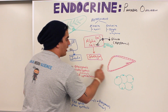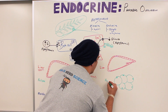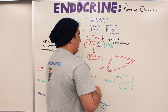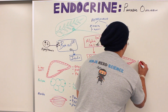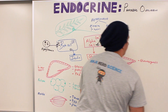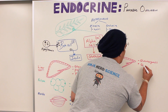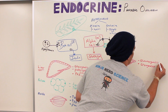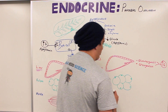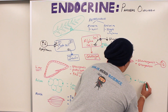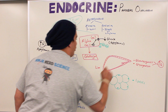Glucagon acts on the liver and the adipose tissue. In the liver, it takes glycerol, amino acids, and other substrates and converts them into glucose — a process called gluconeogenesis. It also breaks down glycogen into glucose — called glycogenolysis — with the overall result of increasing blood glucose levels. In the adipose tissue, glucagon causes lipolysis, breaking down triglycerides into fatty acids and glycerol, some of which are used to make glucose via gluconeogenesis.